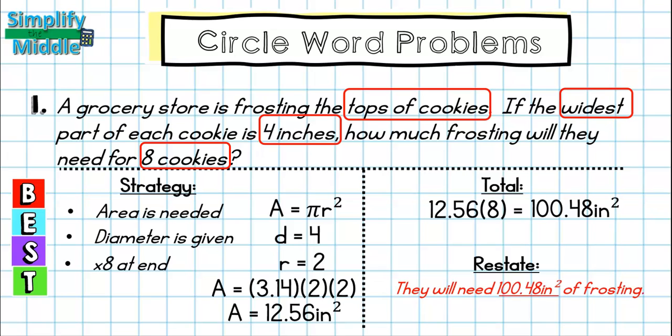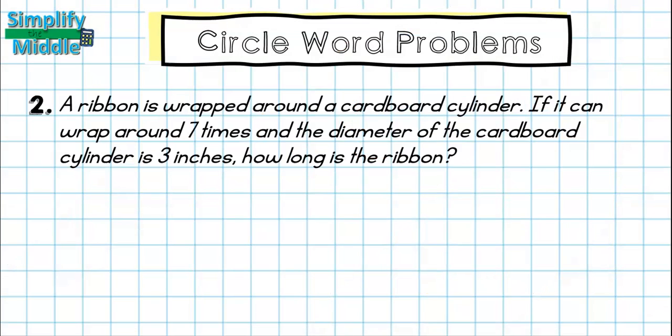Let's try this with another example. In this example, a ribbon is wrapped around a cardboard cylinder. If it can wrap around seven times and the diameter of the cardboard cylinder is three inches, how long is the ribbon? Once again, using my BEST strategy for word problems...